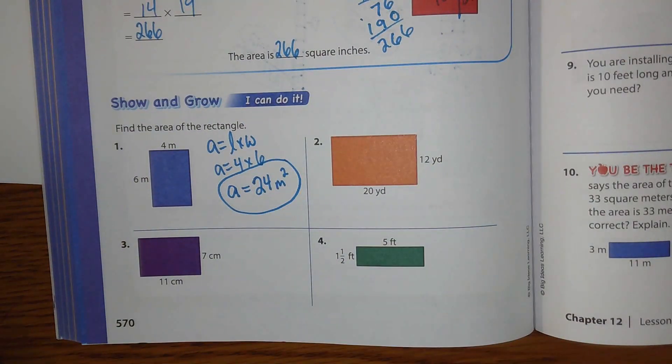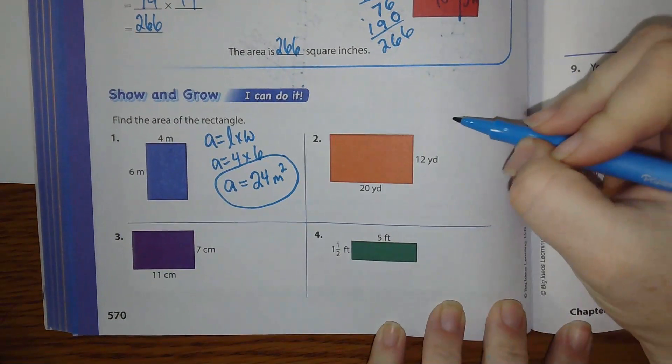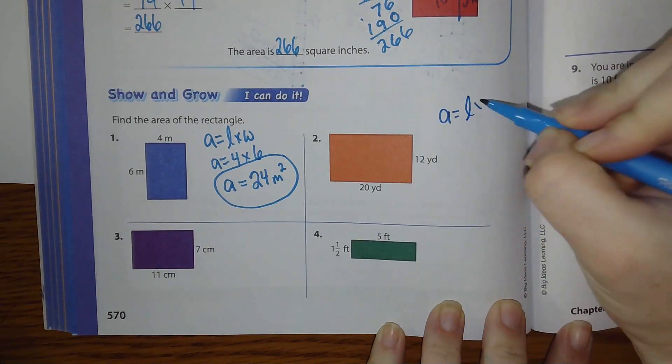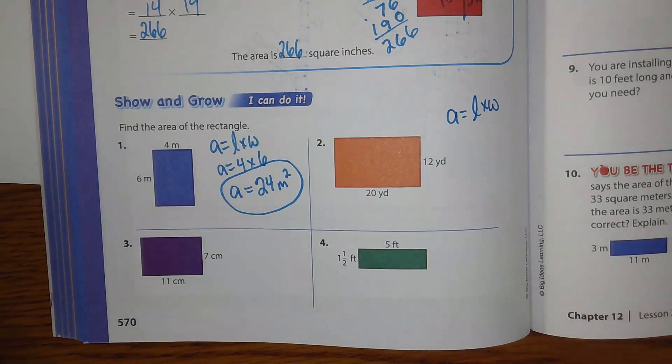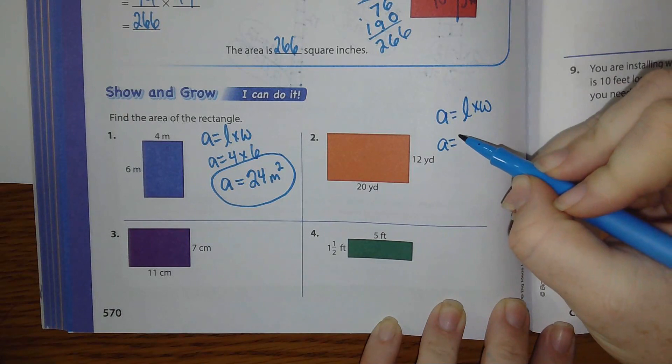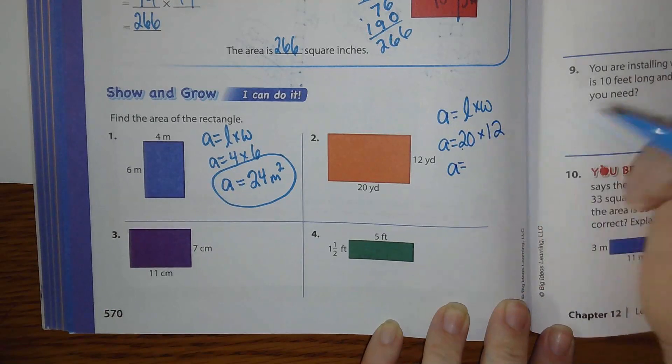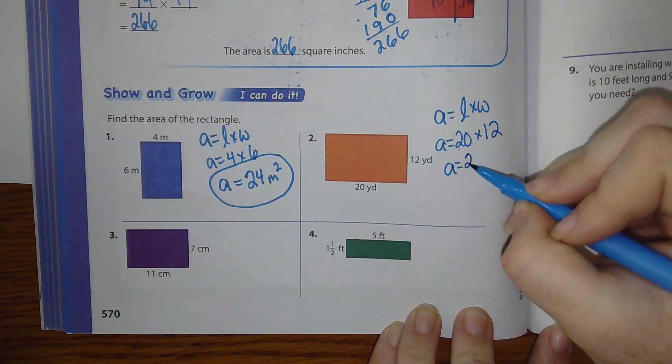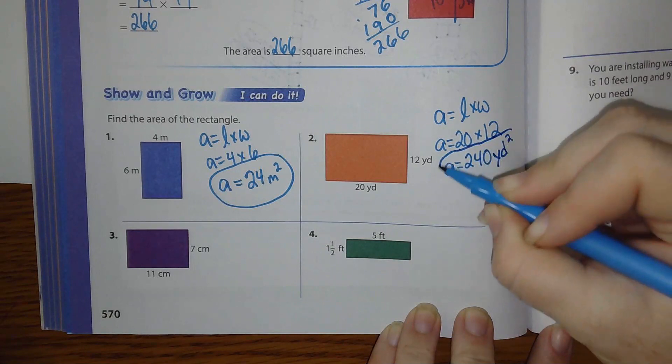4 times 6 is 24. So area equals 24 meters squared. Okay, number 2 says 12 yards on this side. 20 here. So you're going to put area. So A equals L times W. Because area equals length times width. So area equals length is what? Times width. 20. Width is what? 12. So area equals what is 20 times 12? 240. And we're going to put yards squared.